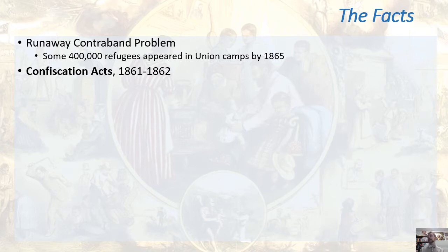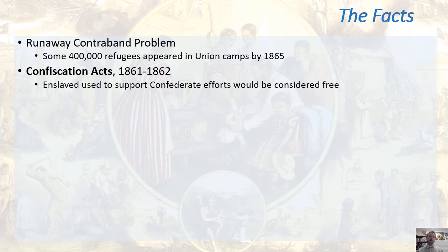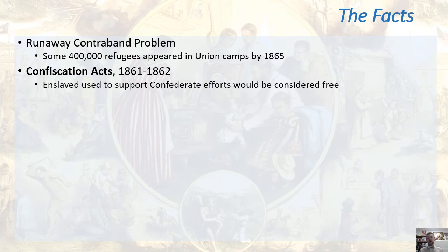One way to approach emancipation was militarily. The Confiscation Acts of 1861 to 1862 allowed the United States to seize the property of rebels as an act of war — confiscating enslaved laborers bound in service to the South, weakening the Southern war effort. But that also opened a door that could never be closed. Once you start changing the status of these folks, it sets in motion changes that will eventually result in the death of slavery itself. The genie cannot be put back in the bottle.